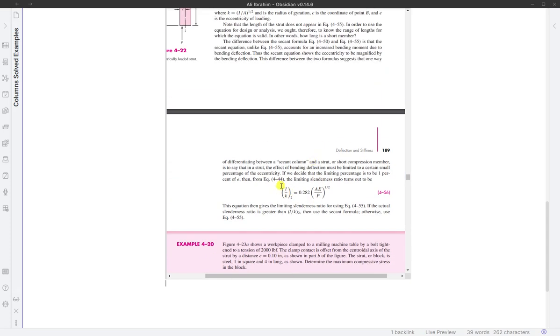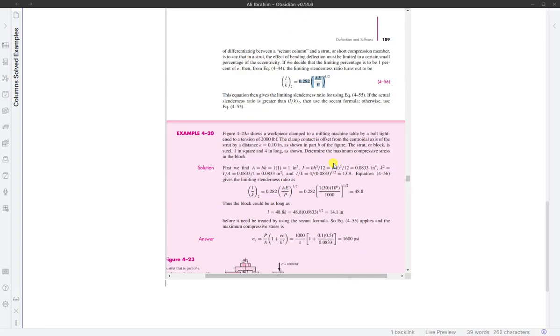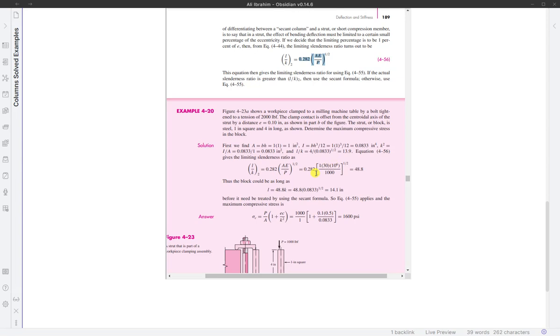Let's see here. Let's look at the L over K ratio and see if it's less than the threshold. We need to check if L over K squared is less than 48.8.